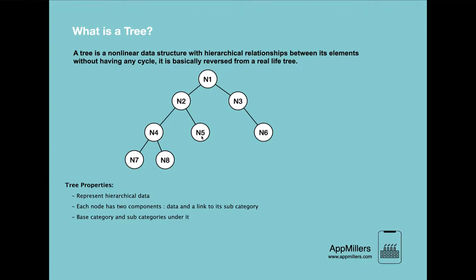We can also see that every node has two components: data and a reference to subsequent nodes. For n1, the data is n1 and it has references to n2 and n3, meaning n1 stores the physical location of n2 and n3. Similarly, n2 has its own data and references to n4 and n5, storing their physical locations. So the property that each node has two components is satisfied.